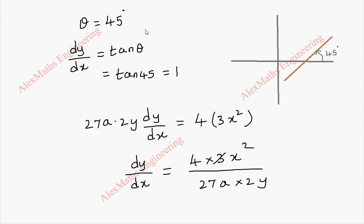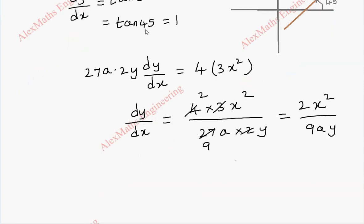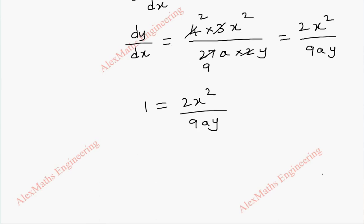We can cancel 9 and 2, giving dy/dx = 2x²/9ay. Now, since dy/dx is 1, we set 1 = 2x²/9ay.